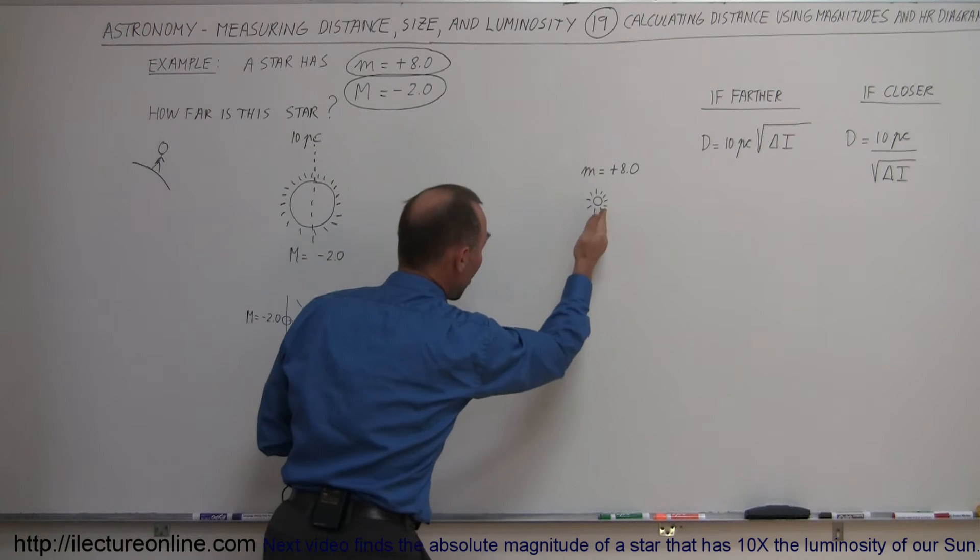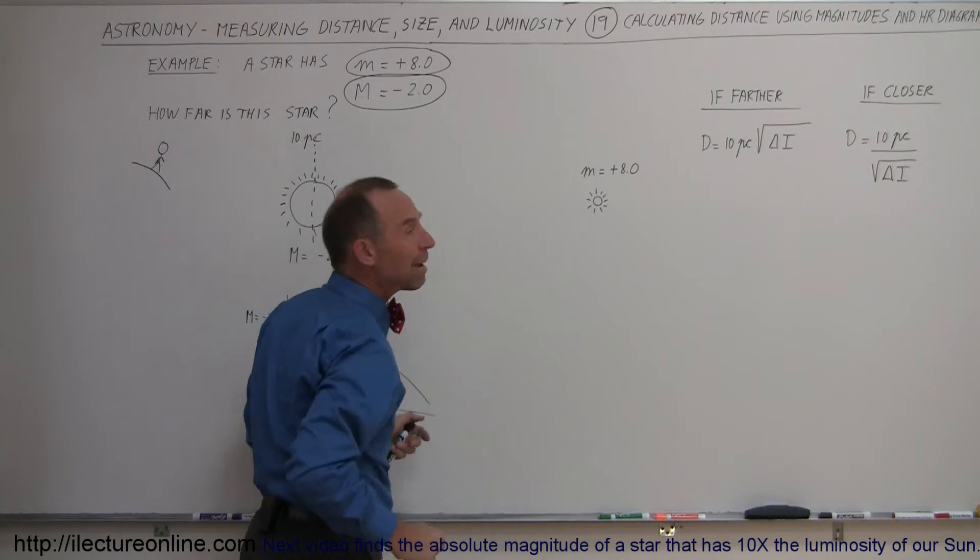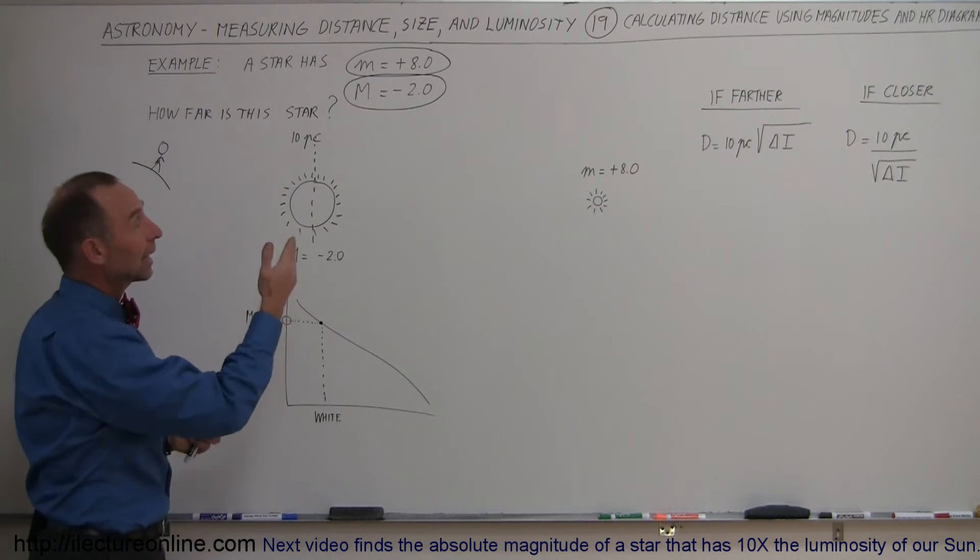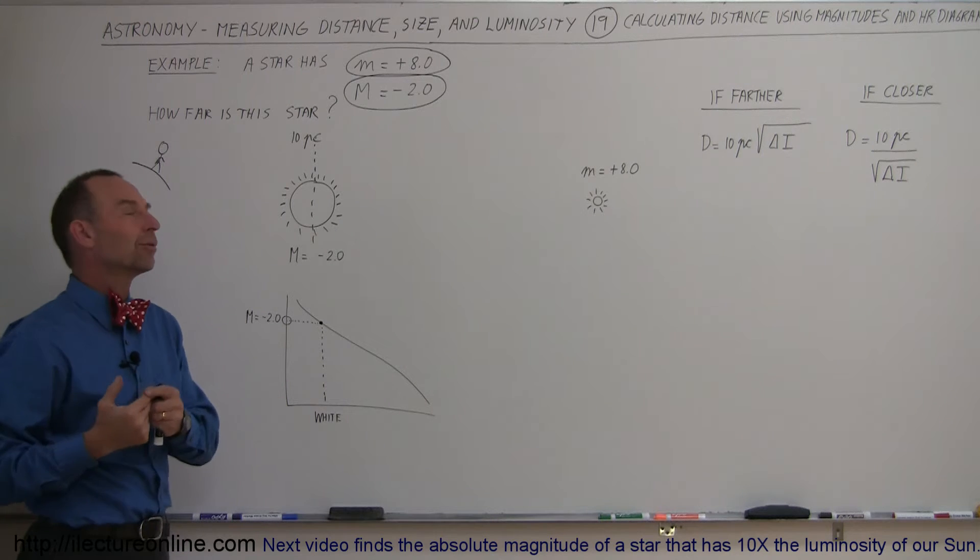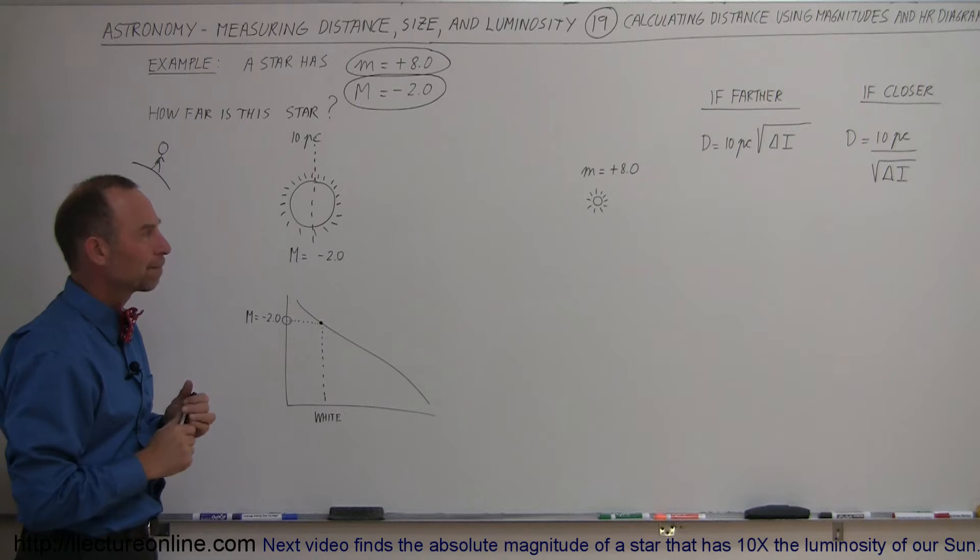So therefore the star is actually way out here, so it looks like a very dim plus 8 magnitude star. Matter of fact, with the naked eye, you wouldn't even be able to see it. You would need a binocular or a small telescope to see the star.